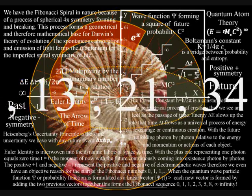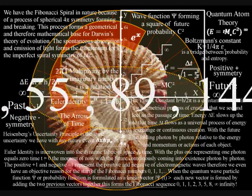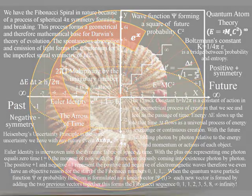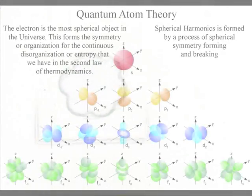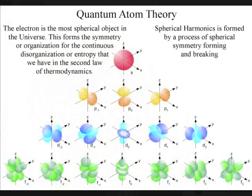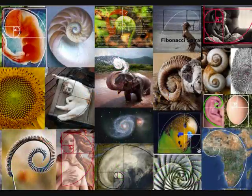At the most fundamental level, this represents a process of spherical symmetry forming and breaking that forms the imperfect spiral symmetry of life that can be seen as the Fibonacci spiral in nature.